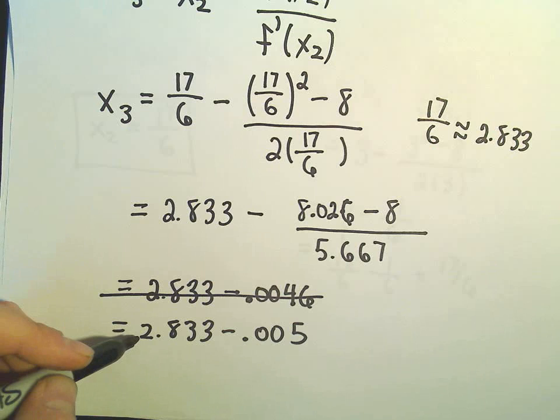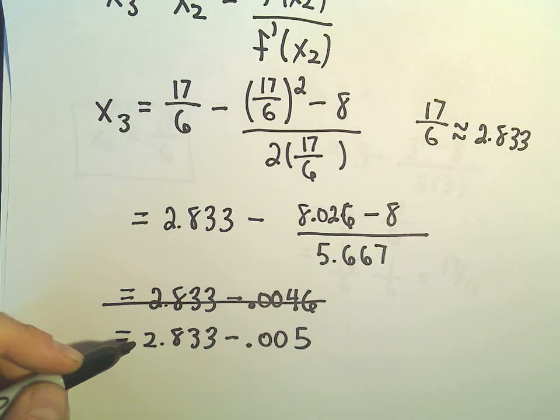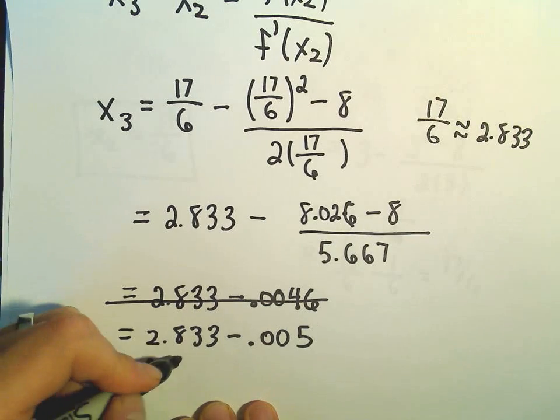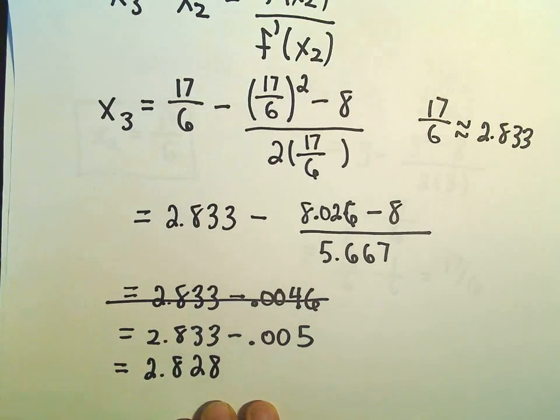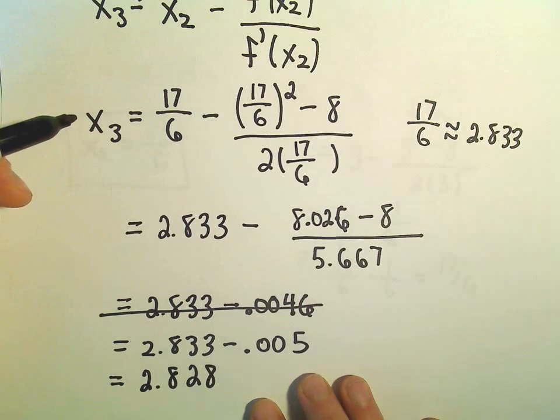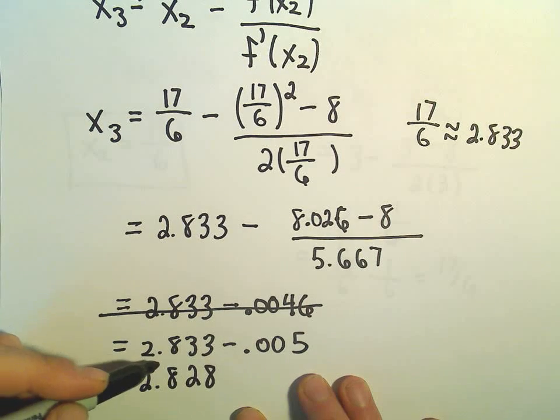make it 2.833 minus 0.005. So now, last but not least, 2.833 minus 0.005. I think I hit that wrong, so I really shouldn't need a calculator for this. 2.833 minus 0.005. Hey, that's going to give us 2.828. Okay, so that would be our, we've done two iterations, and we've got to our third guess.